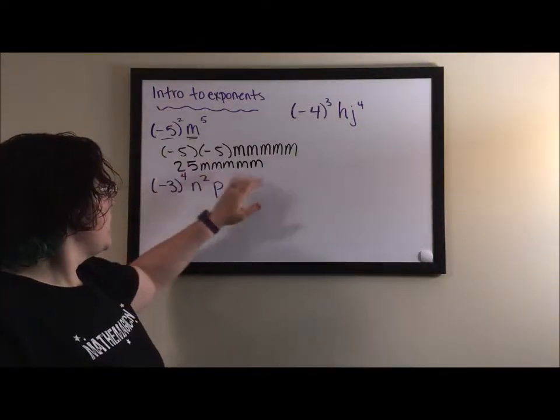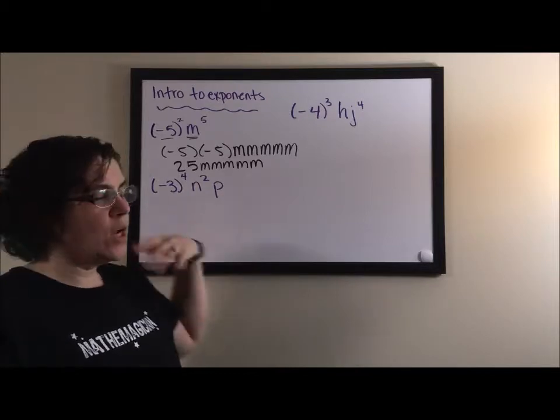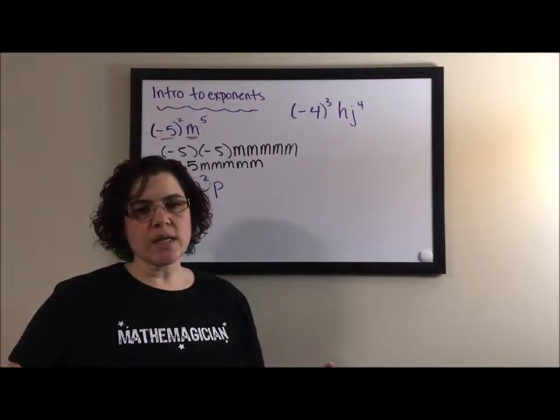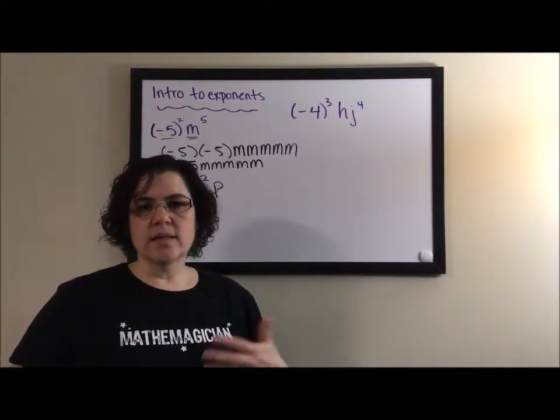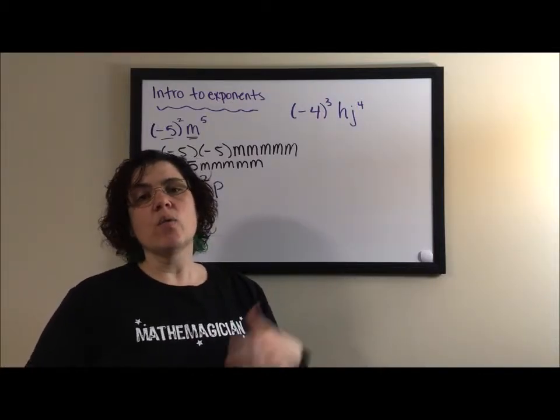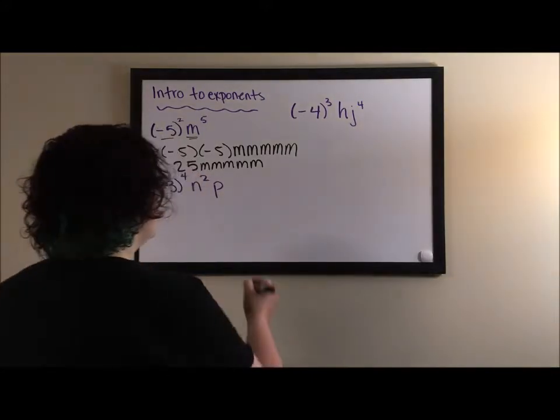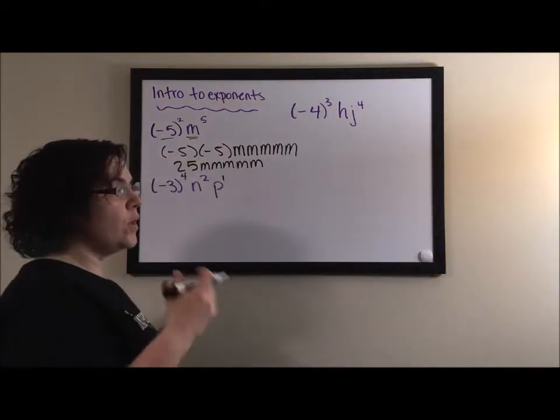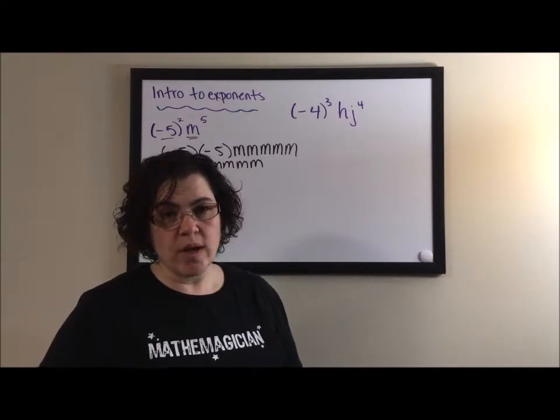Each of these numbers, the twenty-five, the m's, even this little p right here has an implied exponent of one. It's like if I was talking about this marker, I would say look I have a marker not one marker. One is implied. So we could put it in, but usually we don't because why do we write more than we need to write?